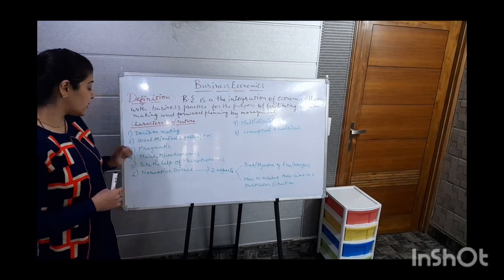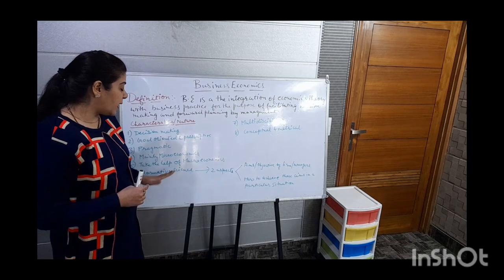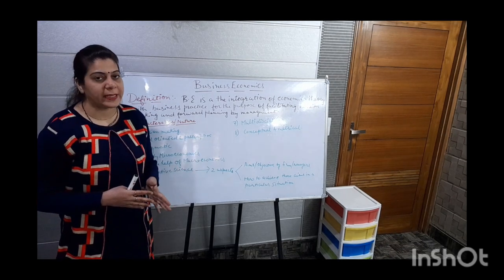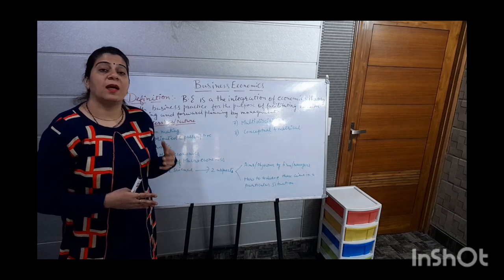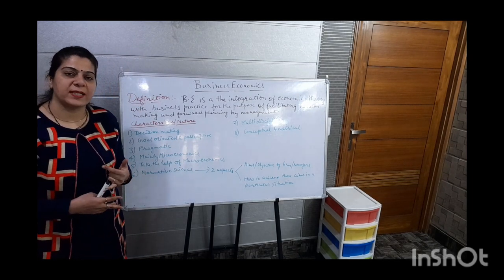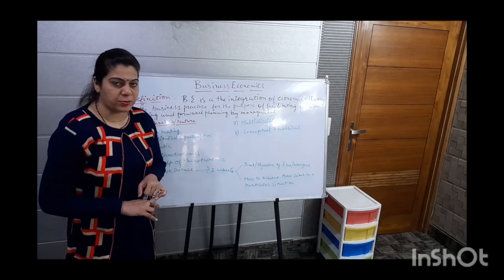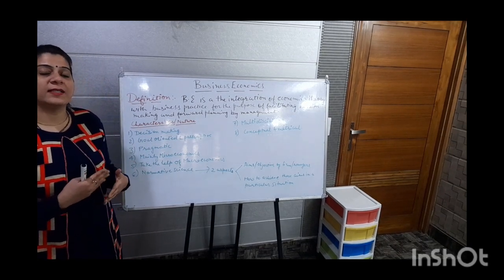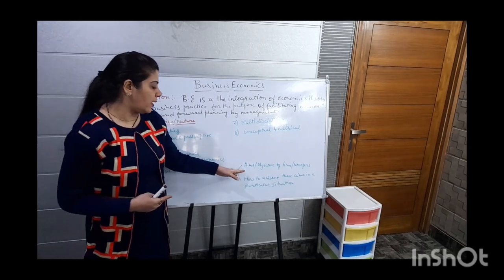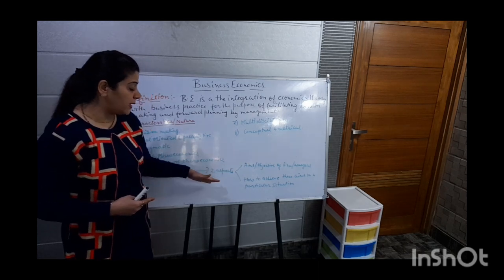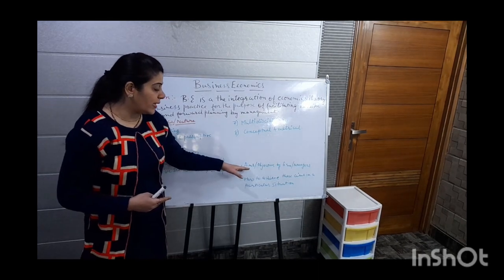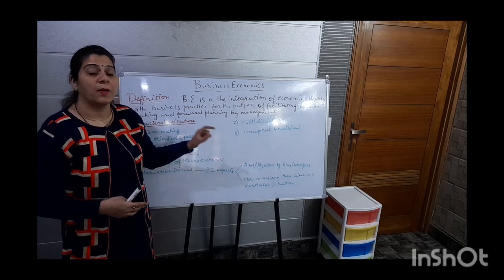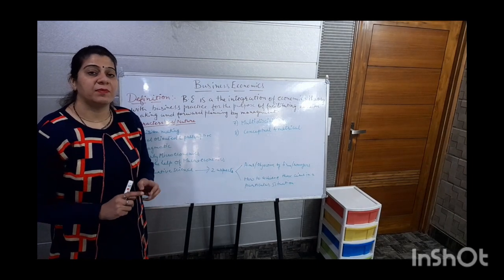Next is normative science. Why do we say business economics is a normative science? Because it is concerned with what ought to be rather than what it is. Basically, what we want is that both our individual objectives and organizational objectives should be achieved. If both are achieved, our organization will boom. It depends on two aspects — the aims and objectives of both the firm and the managers — and both should be achieved.